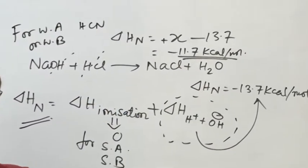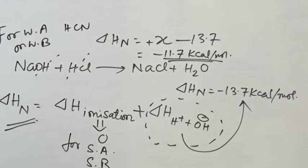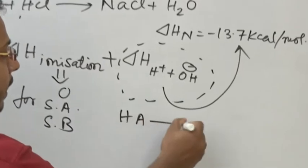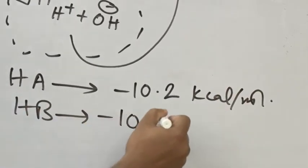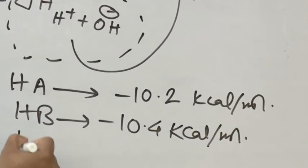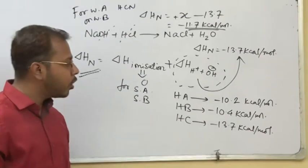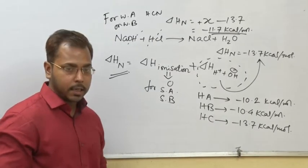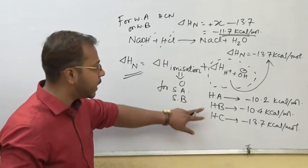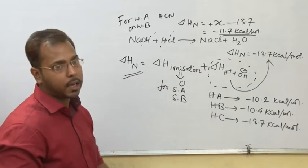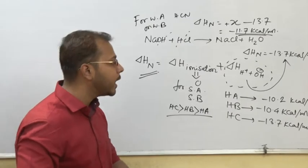The value will be in increasing order — as the heat of neutralization becomes less negative, it indicates greater weakness of the acid or base. For example, if HA has a heat of neutralization of minus 10.2 kcal/mol, HB is minus 10.4 kcal/mol, and HC is minus 13.7 kcal/mol, then the acidity order is HC greater than HB greater than HA.